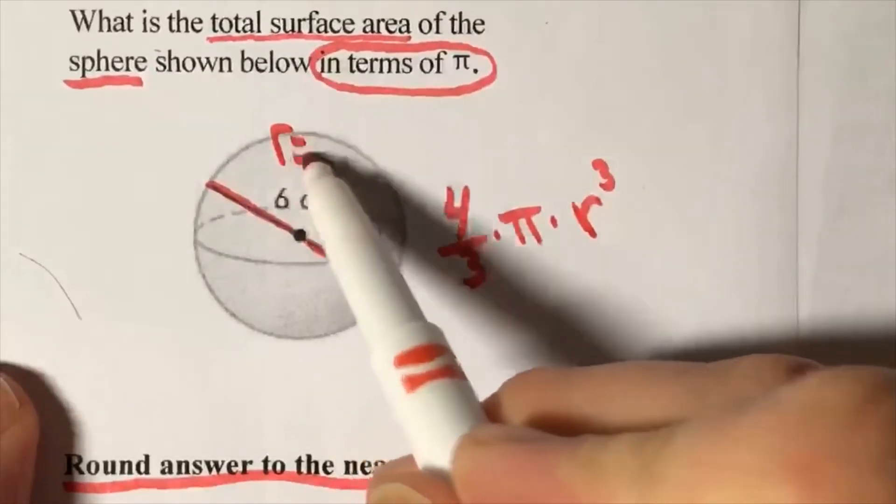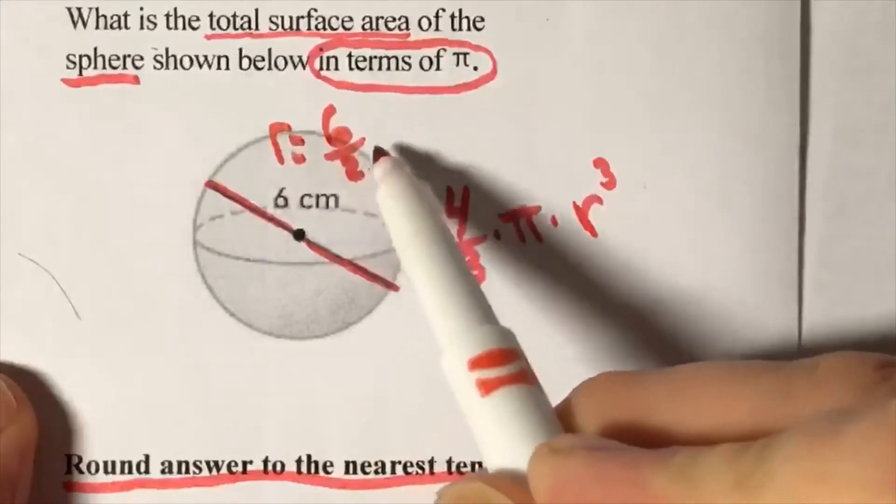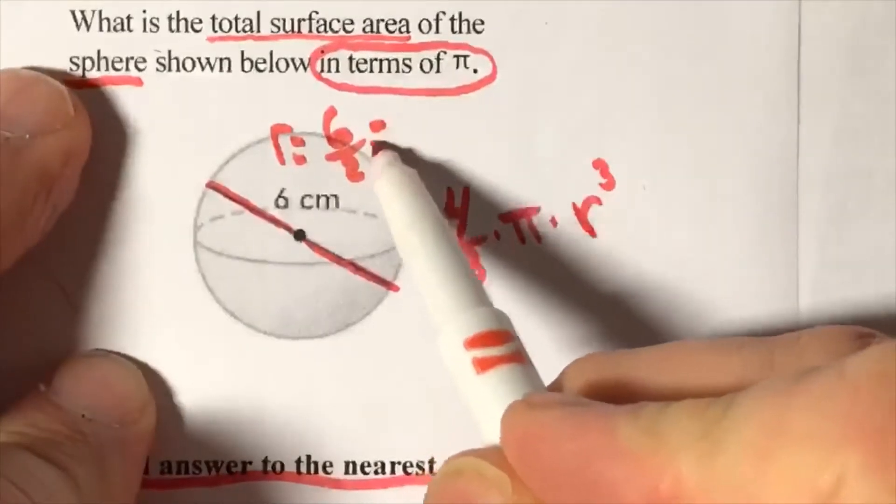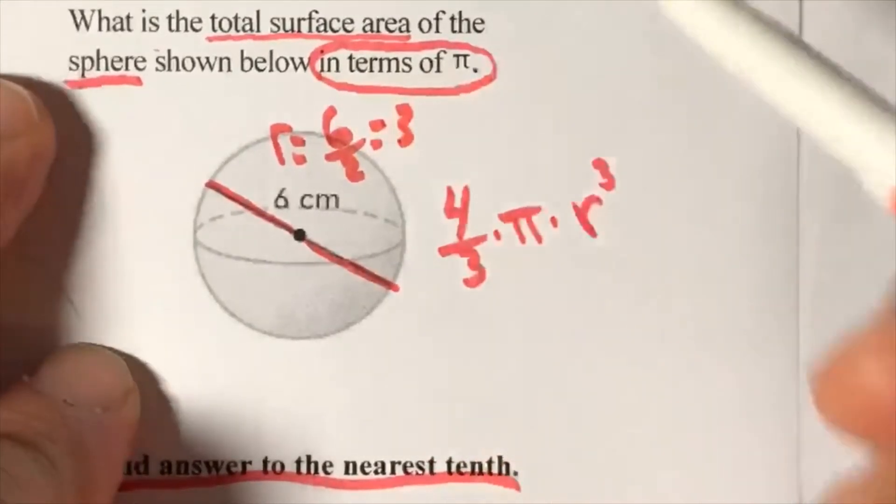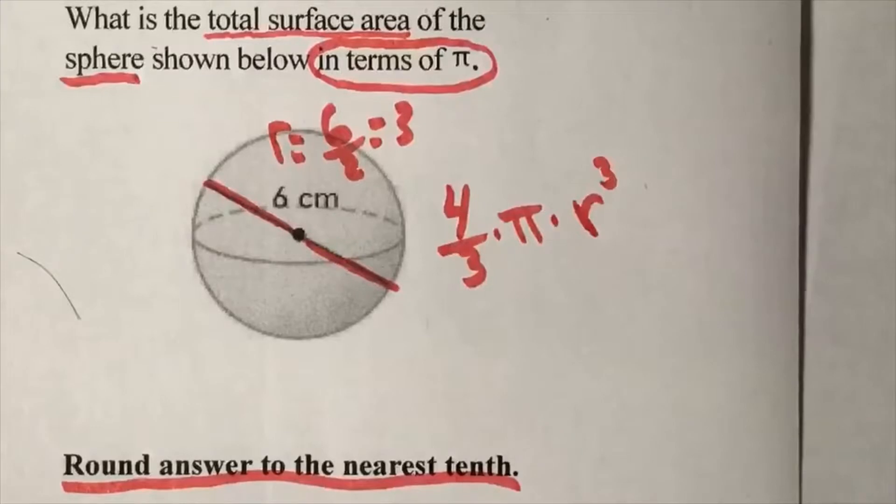Radius is found by dividing the diameter by two. I know my radius. All right,